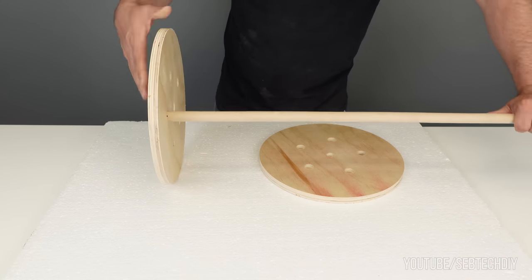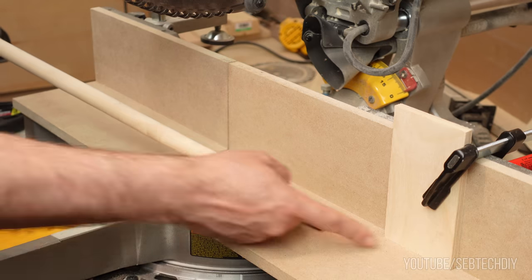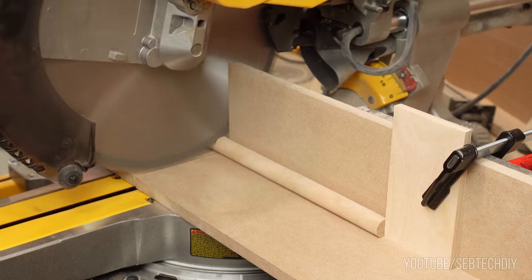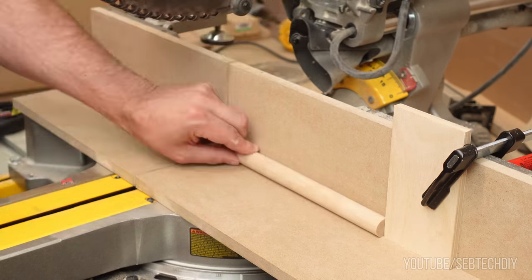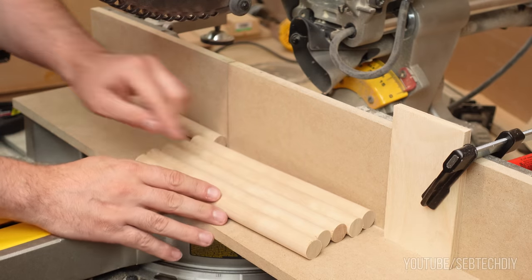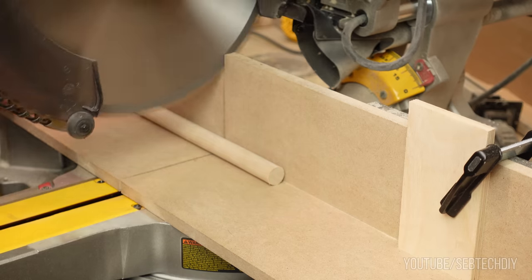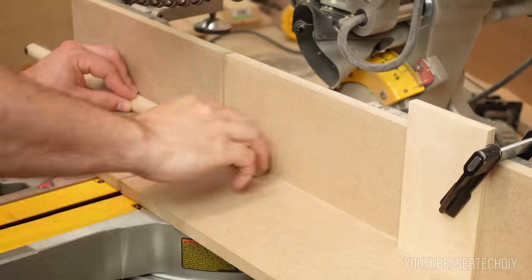Now for the dowels. It's a 3/4 dowel that I cut at every 9 inches and 3/4, and I do this five times. While I'm at it, I also cut two smaller pieces for the axle and the handle.